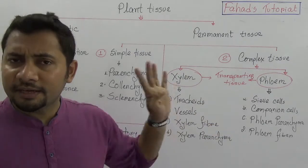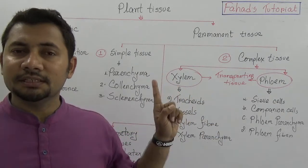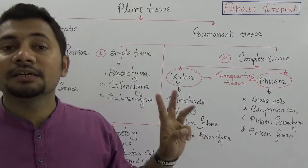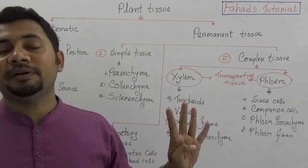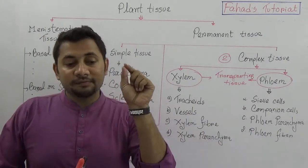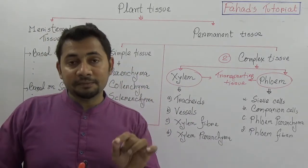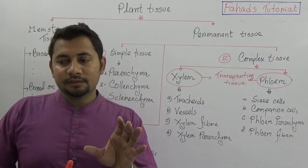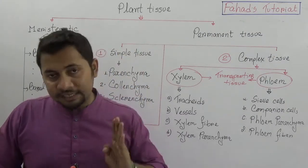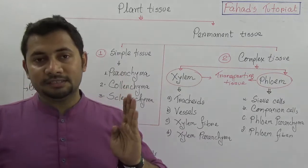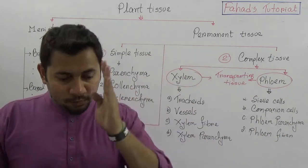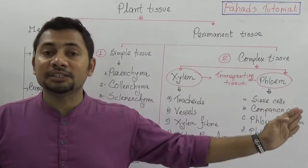In the case of phloem, we also have four types of cells: sieve tubes, companion cells, phloem fiber, and phloem parenchyma. We need to remember these words when answering questions on exam papers, because there are two aspects — we need to first understand and then memorize things to know what is going on and what are the parts of the different tissues.